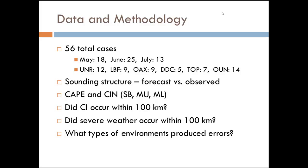In total, after eliminating cases with convective parameterization problems or insufficient CAPE, we ended up with 56 total cases: 18 in May, 25 in June, and 13 in July. It was pretty spread out over all the sites — 12 from Rapid City, 9 from North Platte, 9 from Omaha, 5 from Dodge, 7 from Topeka, and 14 from Norman. I looked at these soundings initially in BuffKit to get a qualitative overview of forecast versus observed differences, then quantified through CAPE and CIN — surface-based, most unstable, and the 100-millibar mixed-layer CAPE. Mostly I focused on CAPE; CIN didn't tell me a whole lot, since a really small error can completely throw off your CIN forecast.